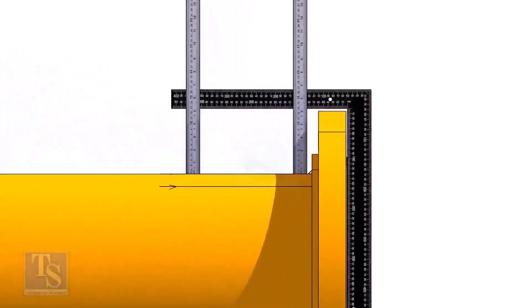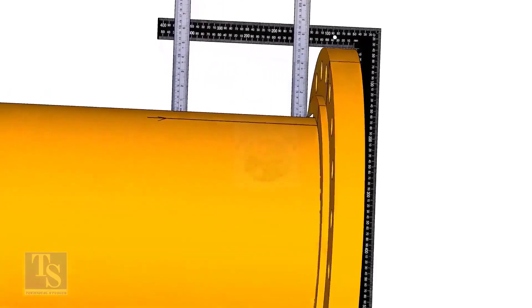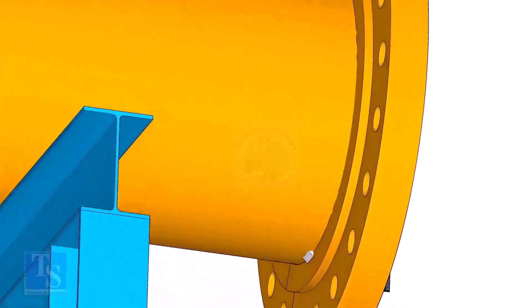Tack weld on the top of the pipe with the flange and check the squareness. If correct, tack weld at the bottom side also.